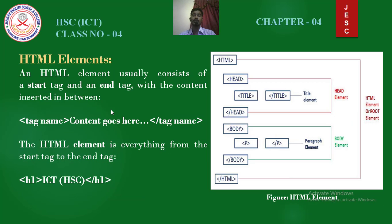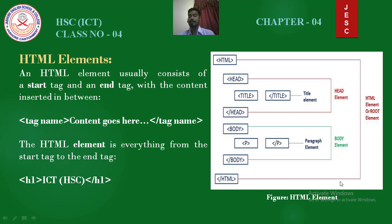HTML elements. An HTML element usually consists of a start tag and an end tag with the content inserted in between. The HTML content is everything from the start tag to the end tag. Here is an example: we use an h1 tag, that means the largest heading tag. Look at the picture — this one is the head tag and inside the head tag there is a title tag. This one is the head element, and this one is the body tag with opening and closing body tags. This portion is the body element, and the total HTML file is the HTML element.